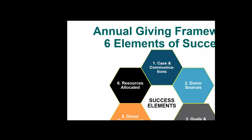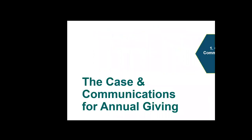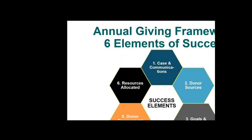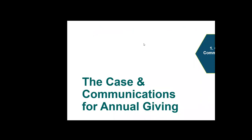So this is what we will cover today: the six elements of success in annual giving, starting with case and communications. We're going to look at case and communications, donor sources, goals and accountability, volunteer leadership, donor engagement plan, and resources that you need. We're going to look first at the case and communications for annual giving, and it's appropriate to begin here as it's the first critical step in preparing for your annual giving program.